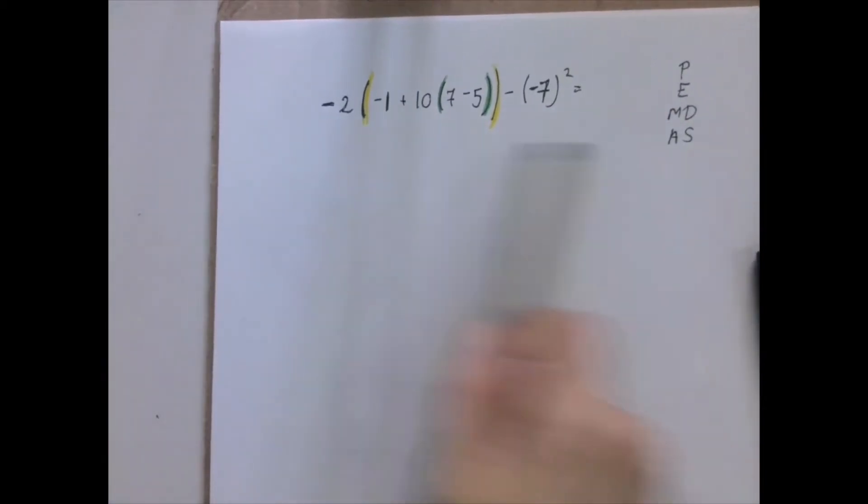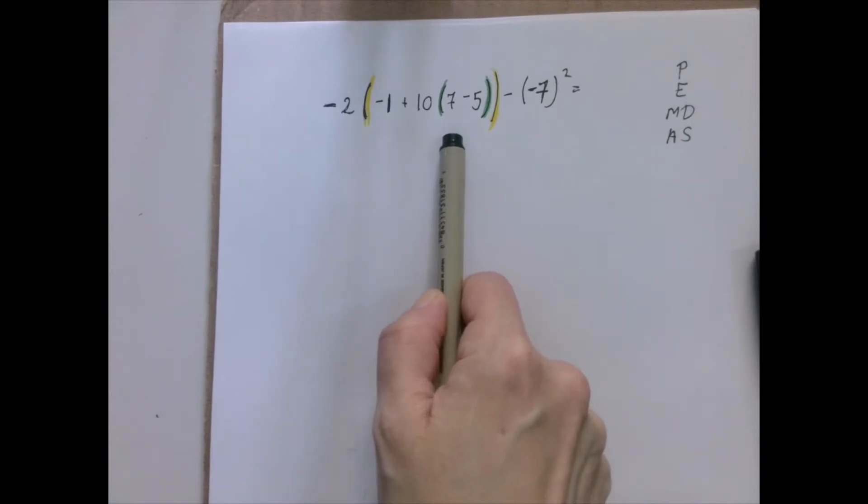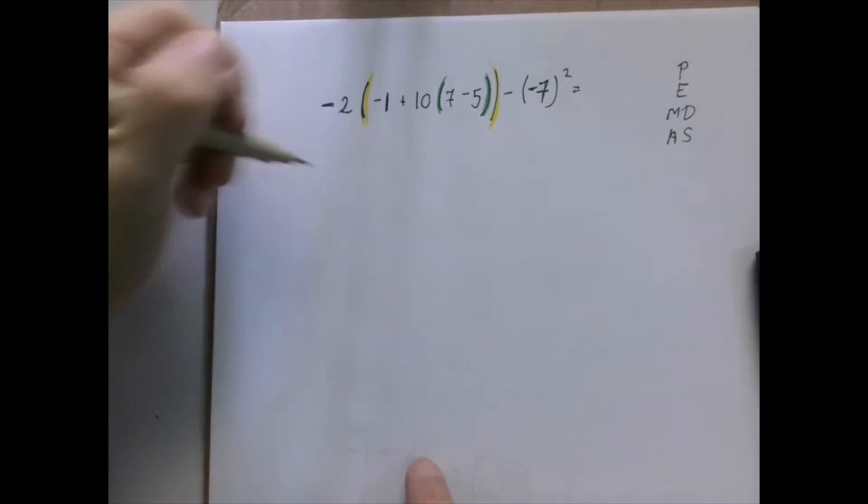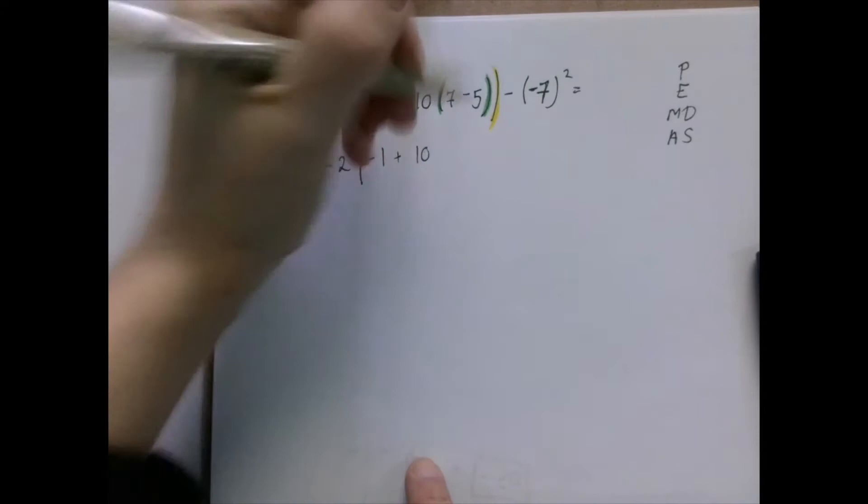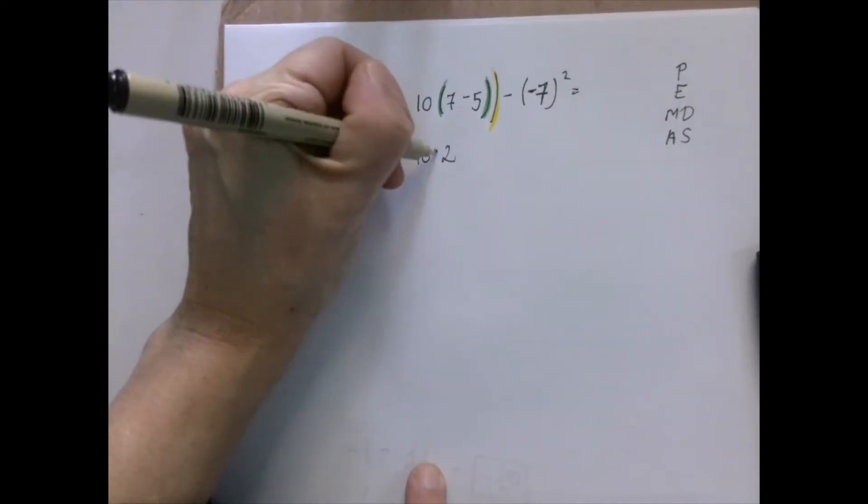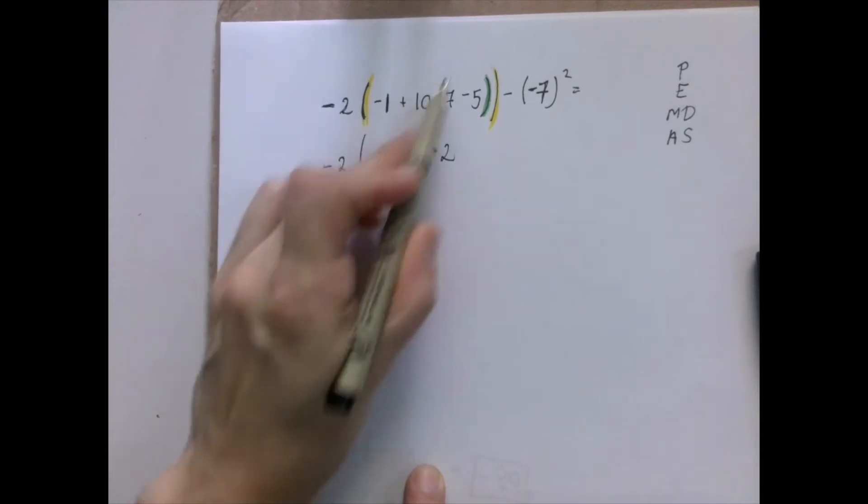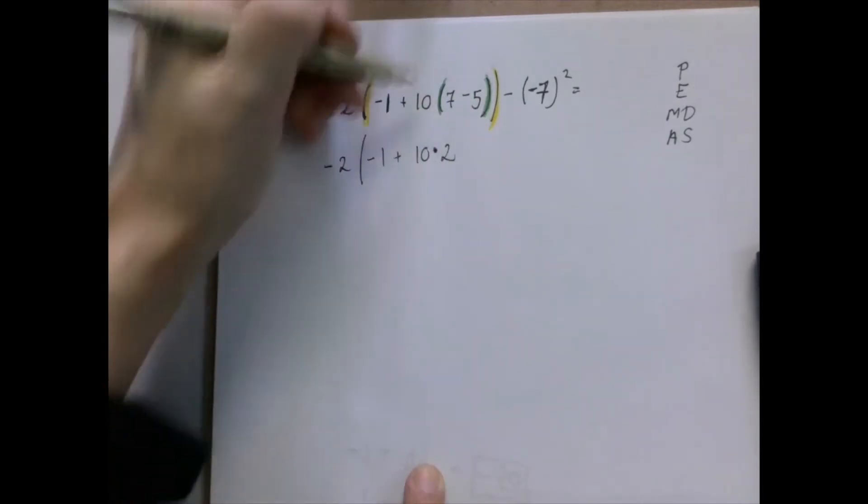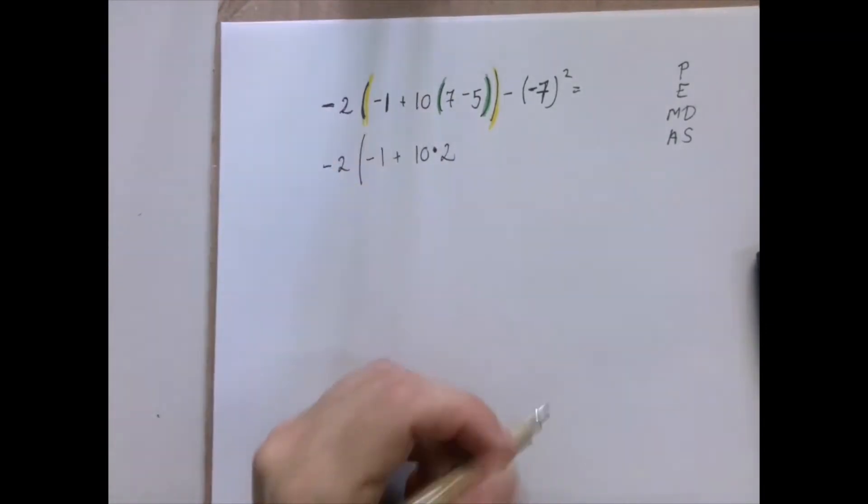The first thing that we have to do is the subtraction in the innermost parentheses. Let's do that. 7 minus 5 is 2. We can put a parentheses there, but we no longer need it, we just need to recognize that between 10 and the expression in the parentheses there is nothing indicating multiplication.